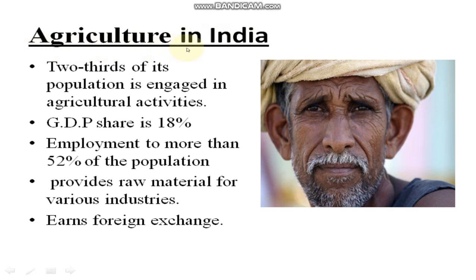Now, the importance of agriculture in India. First, two-thirds of India's population is engaged in agricultural activity. Second, agriculture contributes 18% to India's GDP — 18% of India's total income comes from farming. Third, it provides employment to more than 52% of the population. Fourth, agriculture provides raw material for various industries.